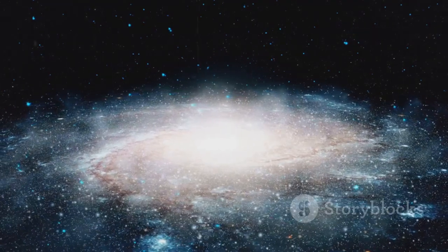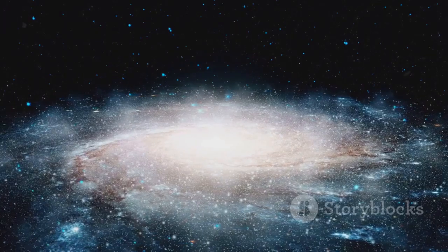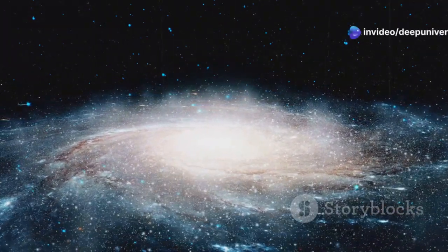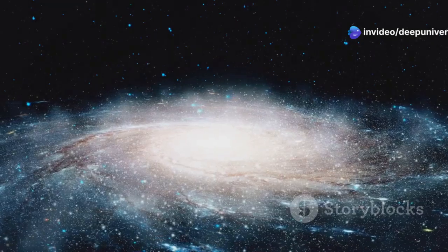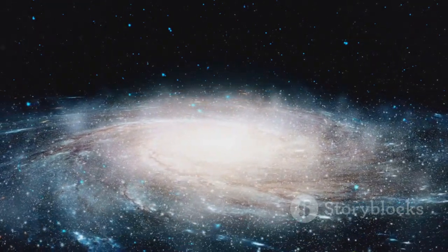The halo is composed of dark matter, globular clusters and streams of stars. Dark matter, though invisible, exerts a gravitational influence holding the galaxy together. Globular clusters are dense groups of old stars and the streams of stars are remnants of smaller galaxies that have merged with Andromeda over time.